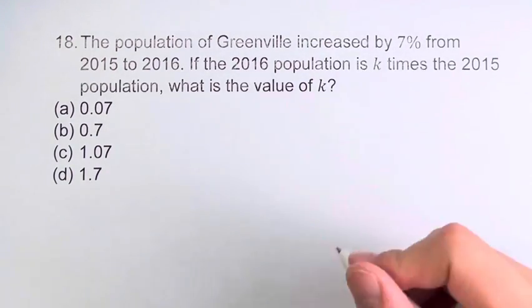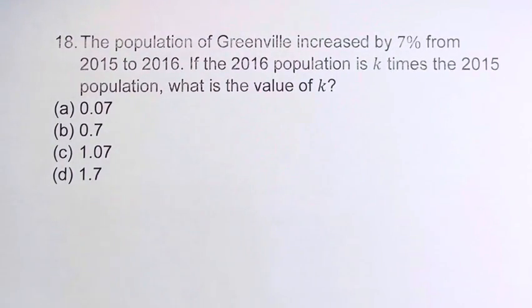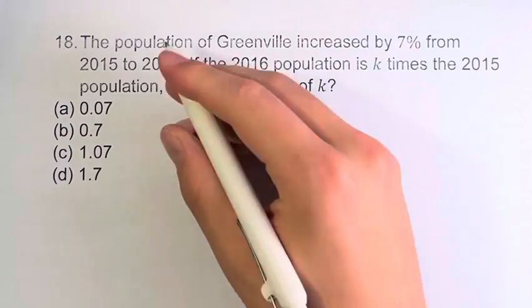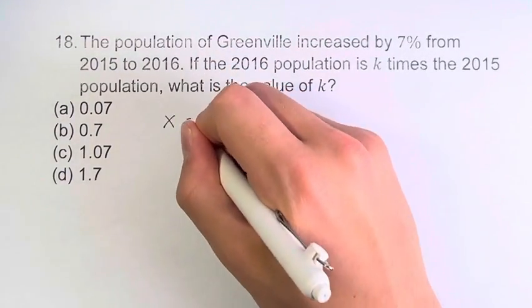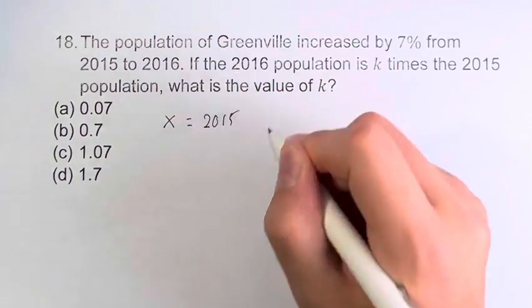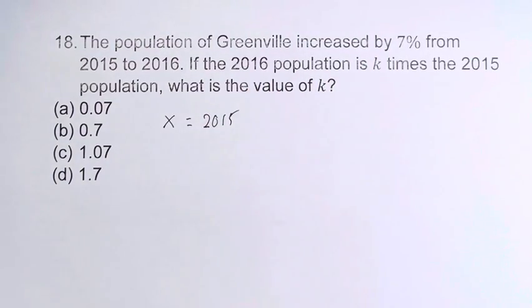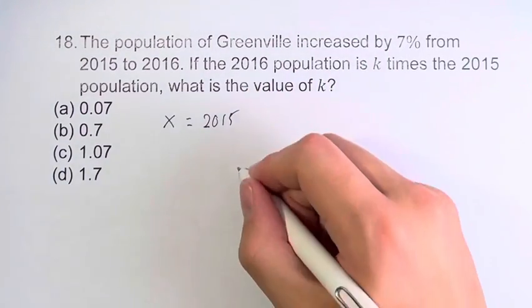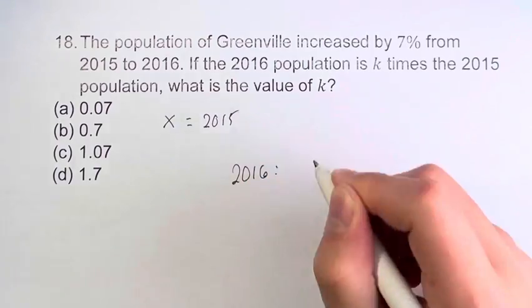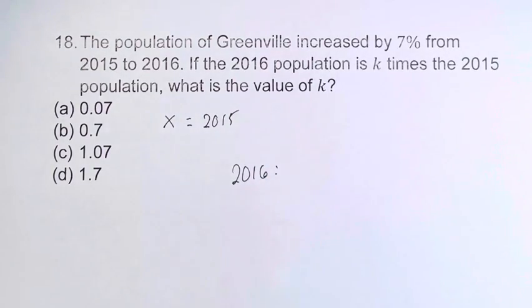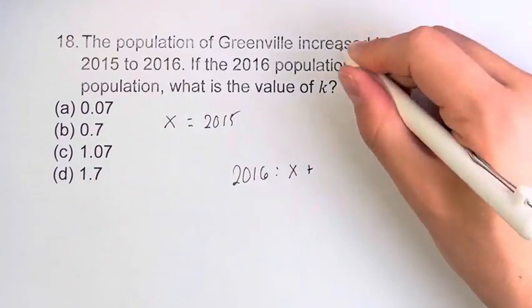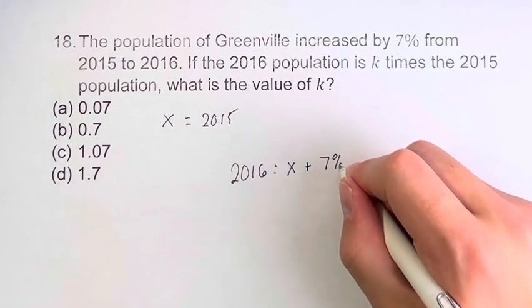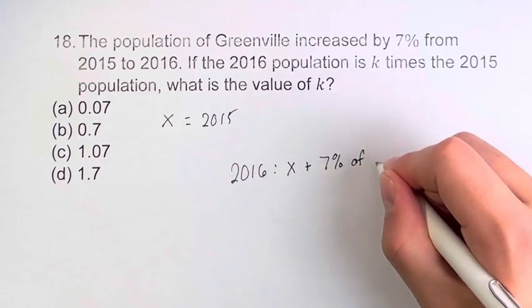So, let's say that the population in 2015 — that's our starting point — let's call it x. This is 2015. What's going to happen in 2016? Well, we have all the population from 2015, plus an increase of 7% of that population.